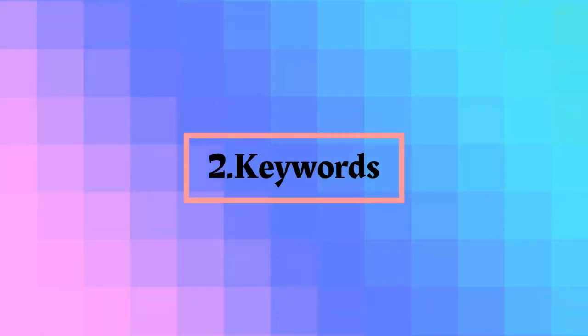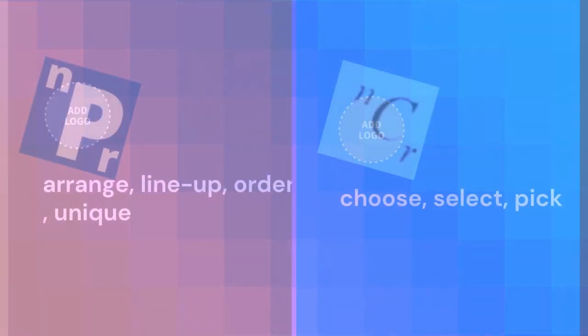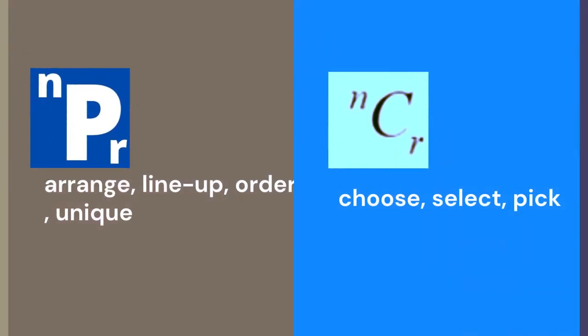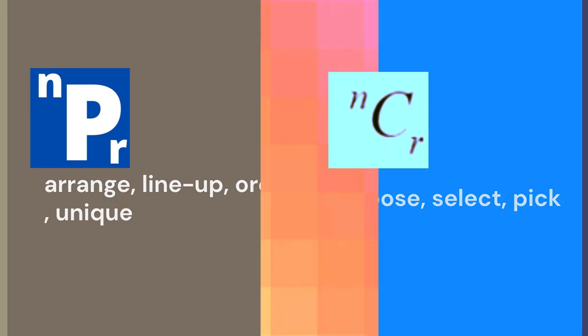The next thing is keywords. The keywords for permutations include arrange, line up, order, and unique. And keywords for combination include choose, select, and pick.